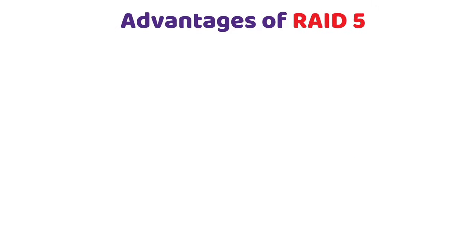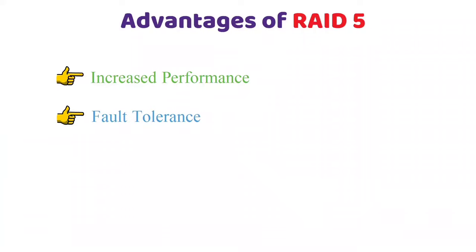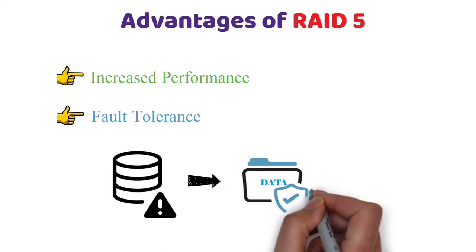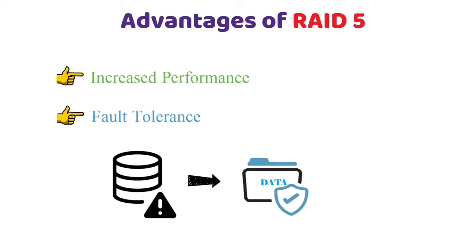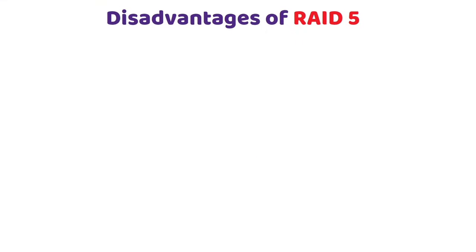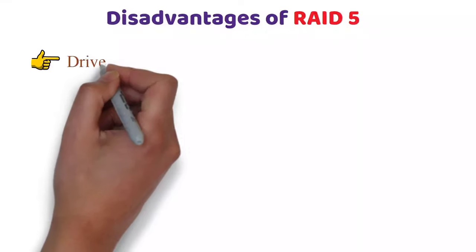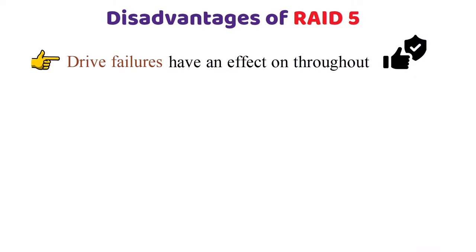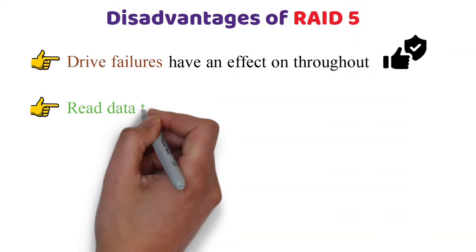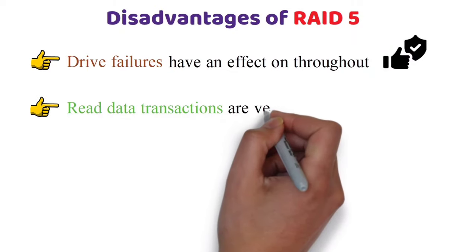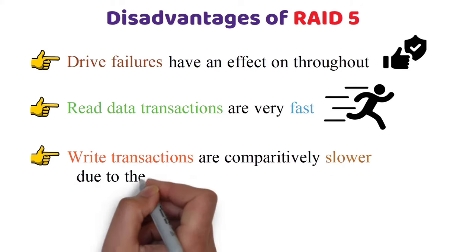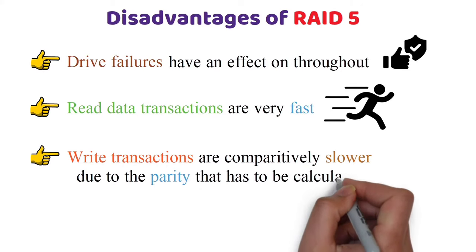Advantages of RAID 5: Increased performance and fault tolerance. If a drive fails, you still have access to all data. Disadvantages of RAID 5: Drive failures have an effect throughout, although this is still acceptable. Read data transactions are very fast, but write transactions are comparatively slower due to the parity that has to be calculated.